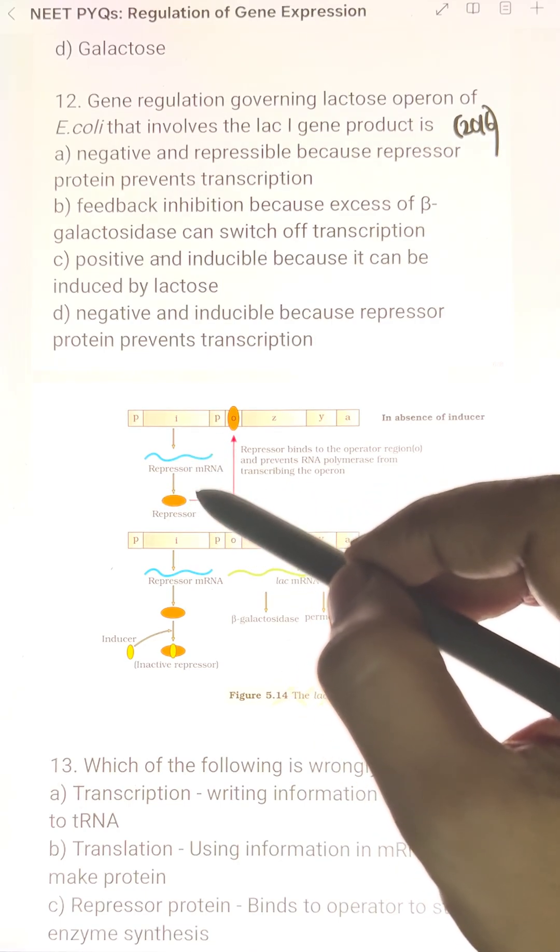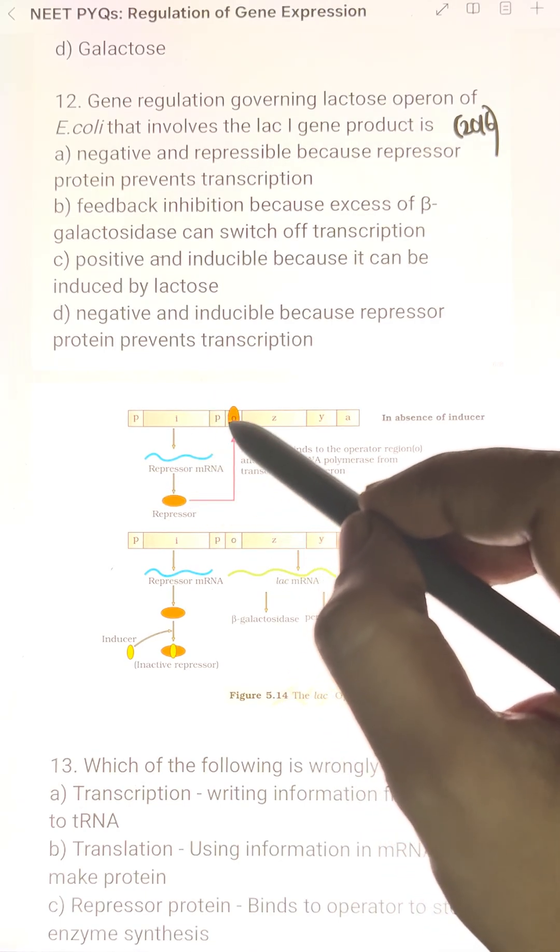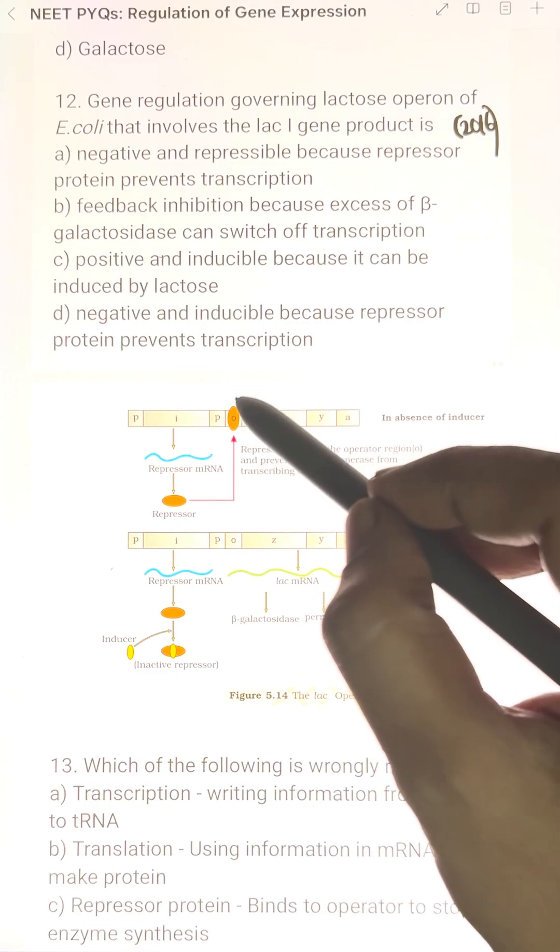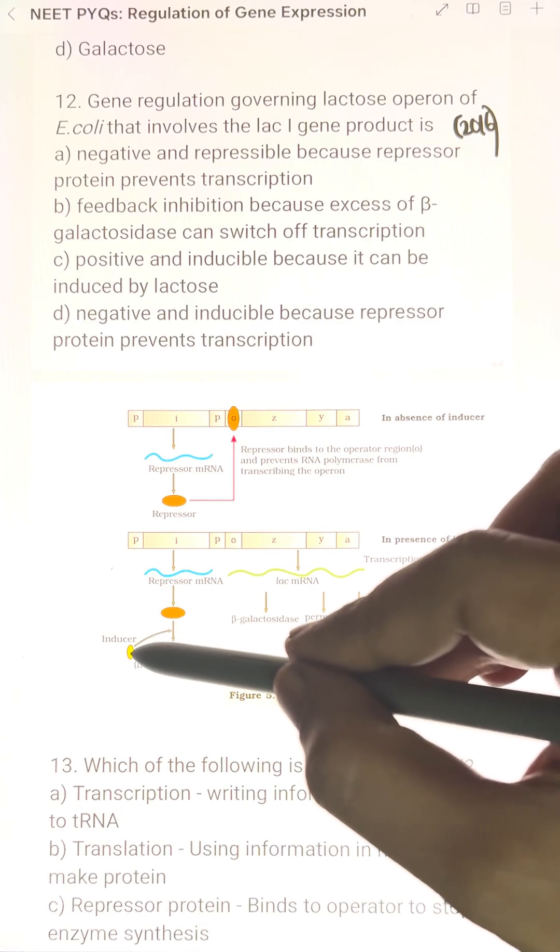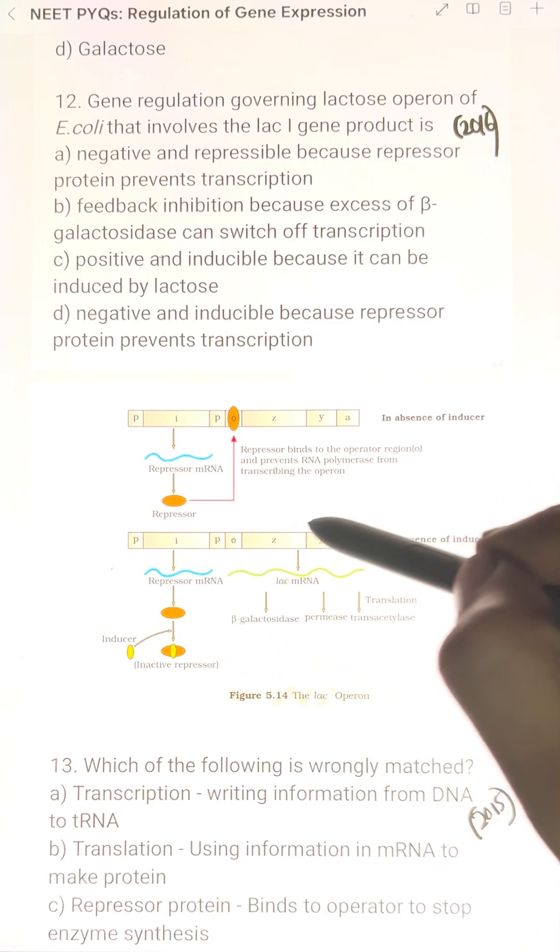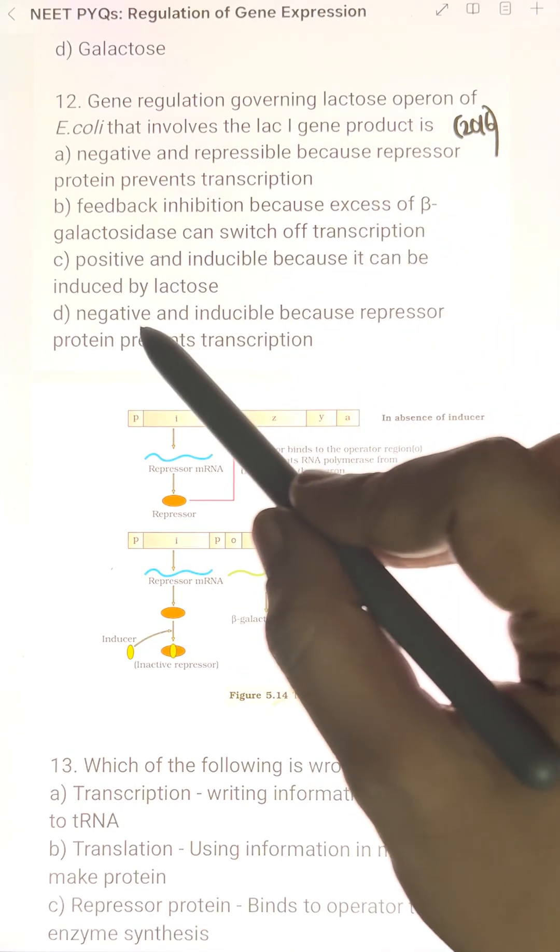Repressor protein is produced. In the repressor operator region, only in the presence of the inducer lactose, the lactose repressor binds on the transcription. So the answer is D.